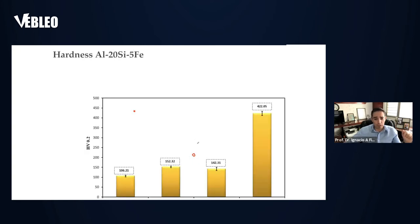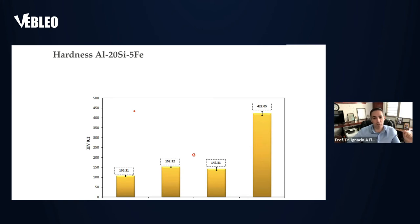Now let's move to the mechanical properties. In terms of micro hardness for the ingot, we got 106. However, if we increase the solidification rate with suction casting, we moved about 50% higher. For the melt spinner, it's four times the hardness of the master alloy — quite interesting, since we eliminate the stress concentrations present in the needle-shaped structure.